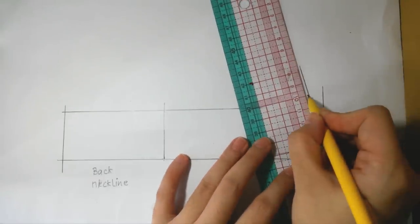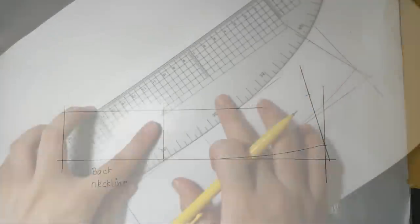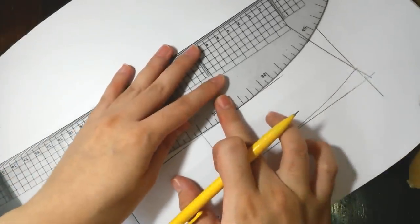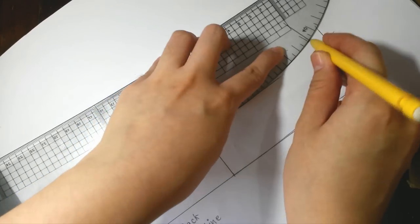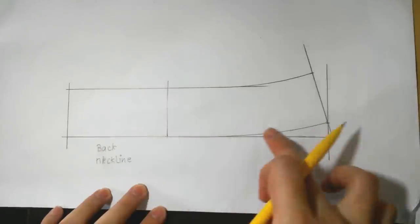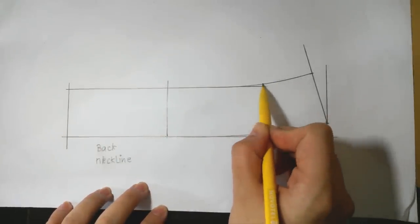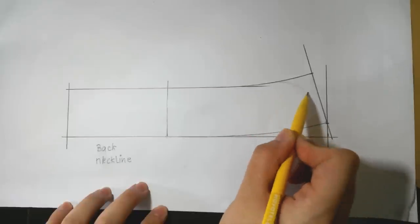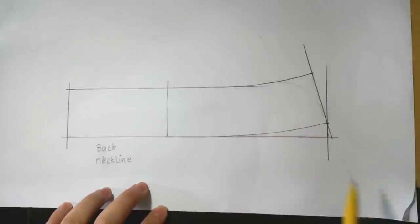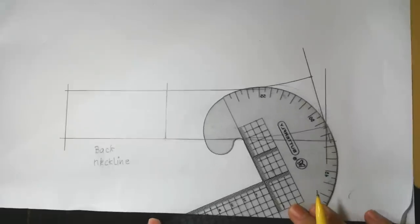Mark 4cm tall. Now we first draw roughly how round you want the collar tip to be. After you are sure with the shape, trace the line and shape it with the curved ruler.